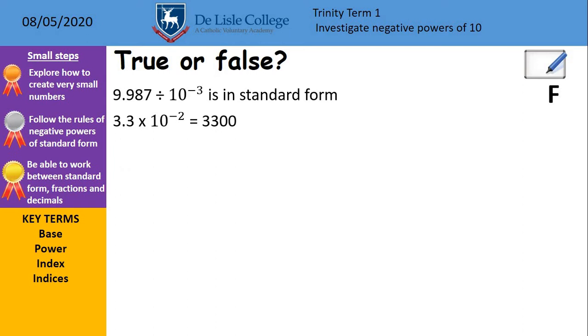3.3 times 10 to the minus 2 I'm saying is 3,300. Is that true or false? Once again, that is false. If it was 3.3 times 10 to the power of 2, then we'd be looking at a different story there. But it's minus 2, so we're going smaller, so the decimal point should have gone to the left, and we'd have ended up with 0.033.